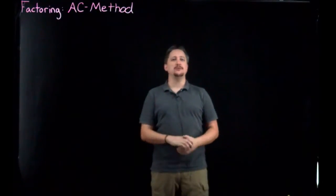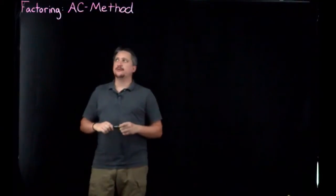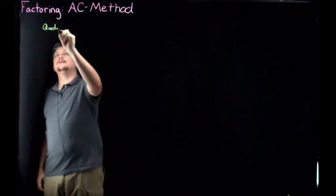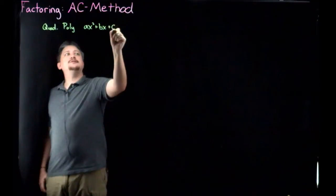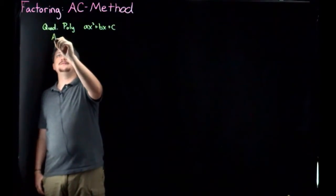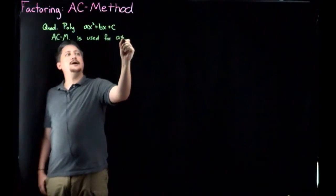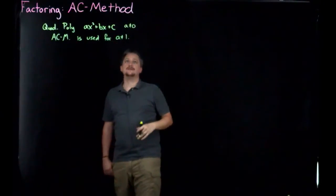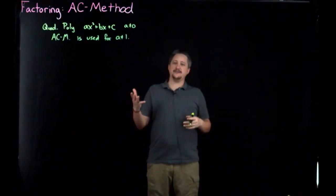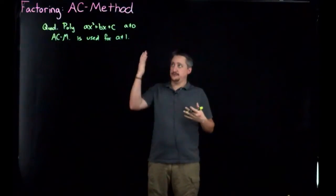Hello! In this video we're going to be doing factoring using the AC method. This is another method for factoring quadratic forms — a quadratic polynomial of the form Ax² + Bx + C. The AC method is used when A is not zero (otherwise it's just linear), and specifically when A is not one. When A is one, we use the coefficients method. So this is what you do when A isn't one.